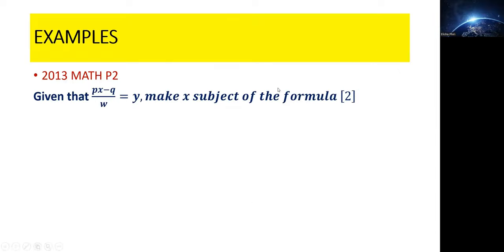So this question came in 2013, math paper 2, grid 9. Given that px minus q over w is equal to y, make x the subject of the formula. So what you do is, first of all, start with the equation.